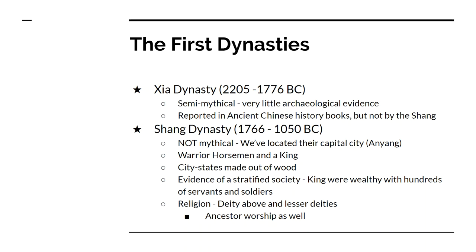We have some evidence of their religion. We're fairly certain their religion was based around nature. They believed in a deity above. They made sacrifices and prayers to ancestors, and then their ancestors would put in a good word with their gods for them. Kings were considered high priests, but they weren't divine — not godly like you would see in Egypt. And their religion is very closely tied to astronomy and observing the stars.